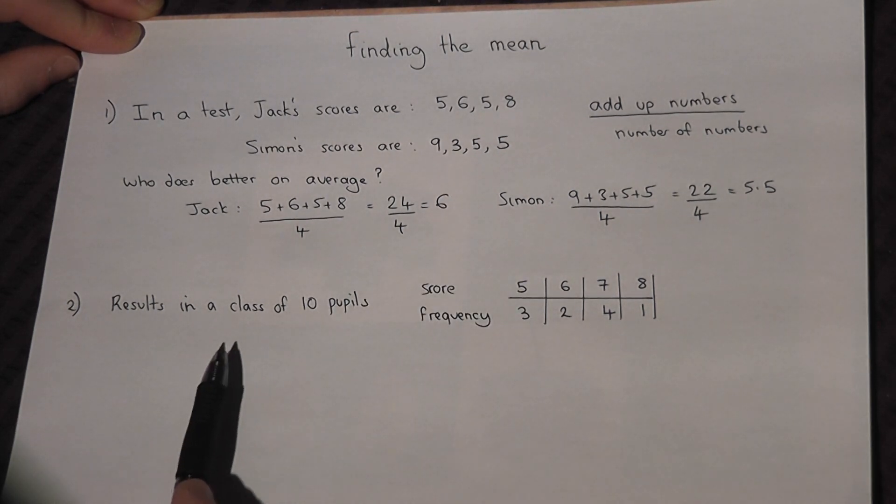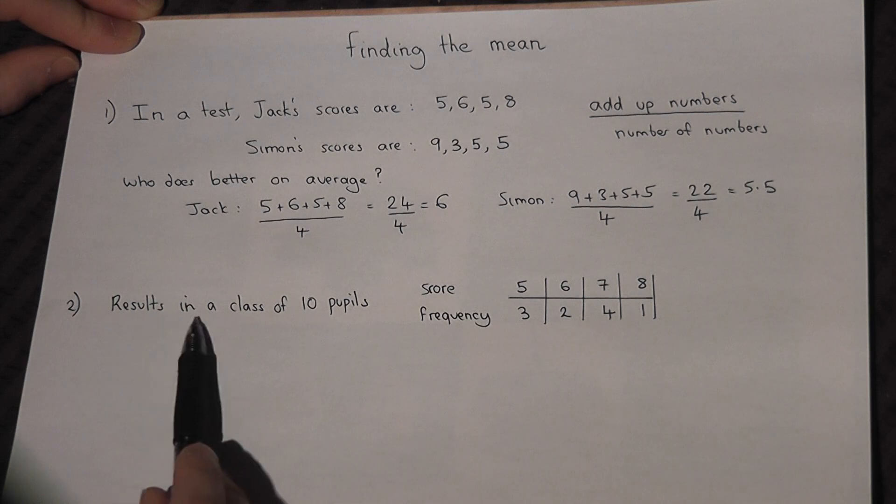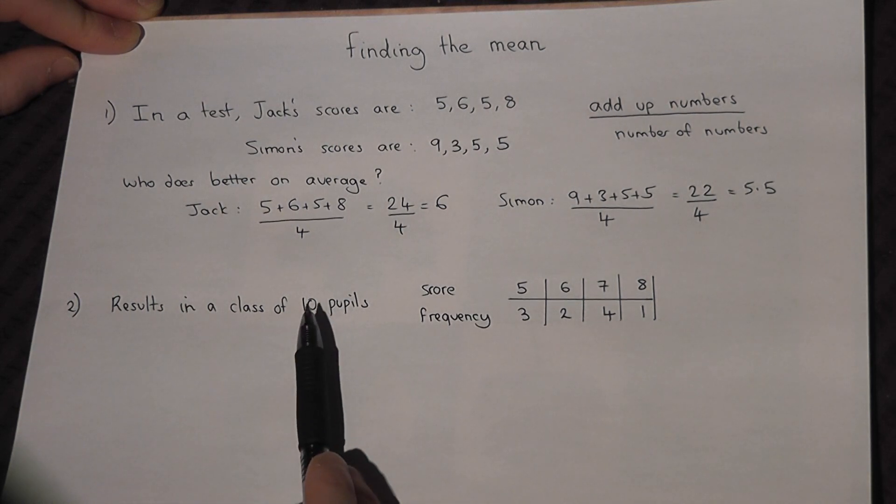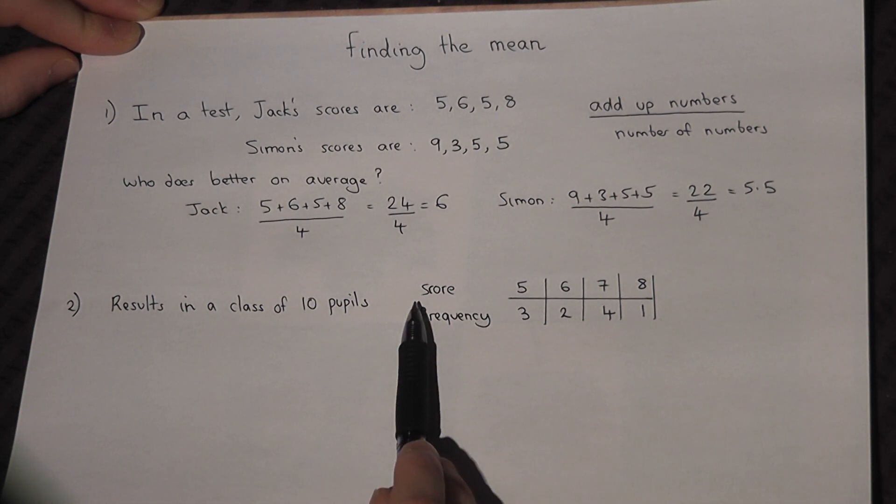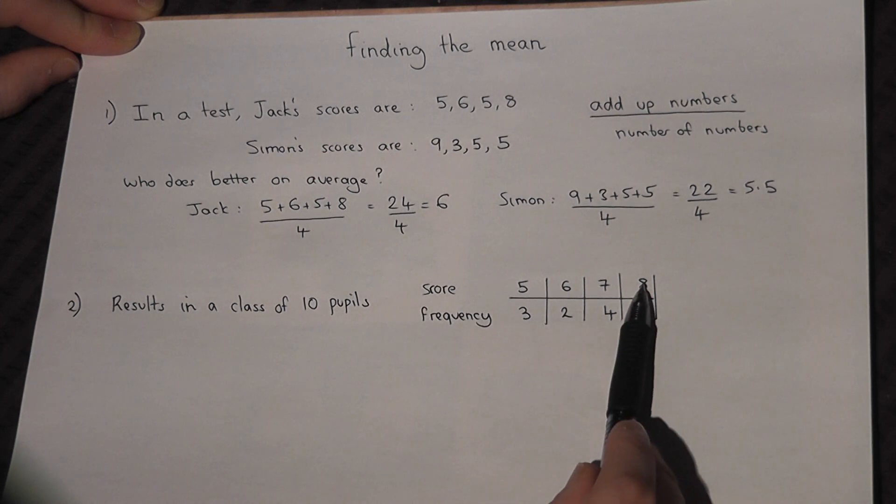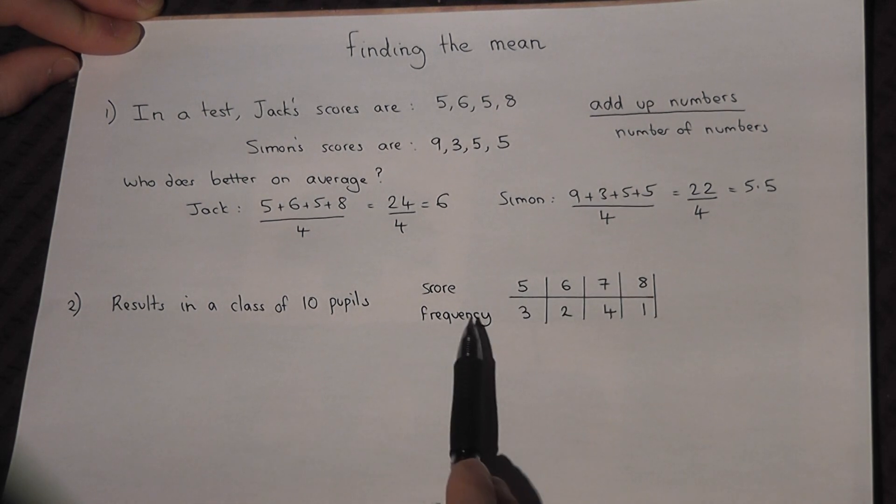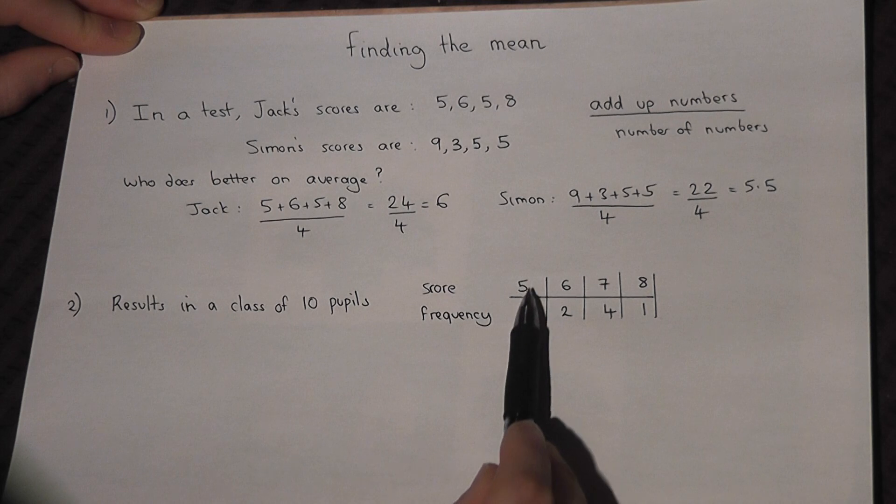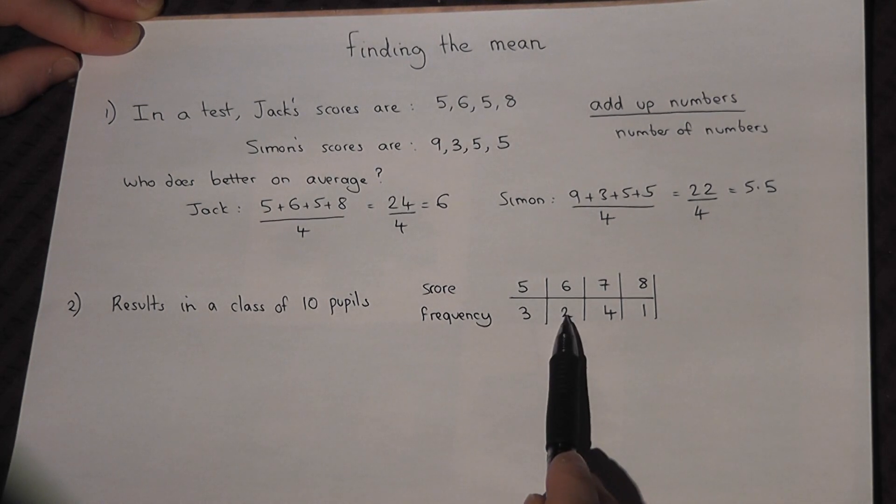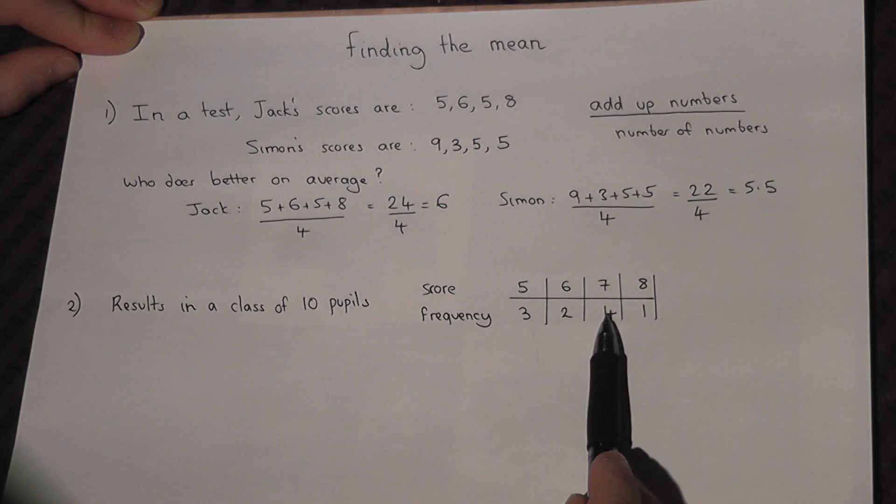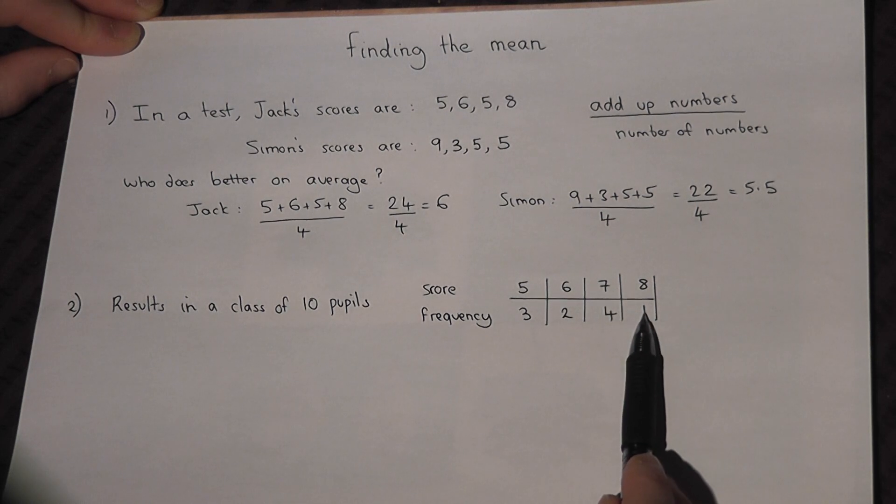Now then, in the second example, we have 10 pupils who do a test. Their scores range from 5 to 8. And this shows that three people got a score of 5, two people a score of 6, four people a score of 7, one person a score of 8.